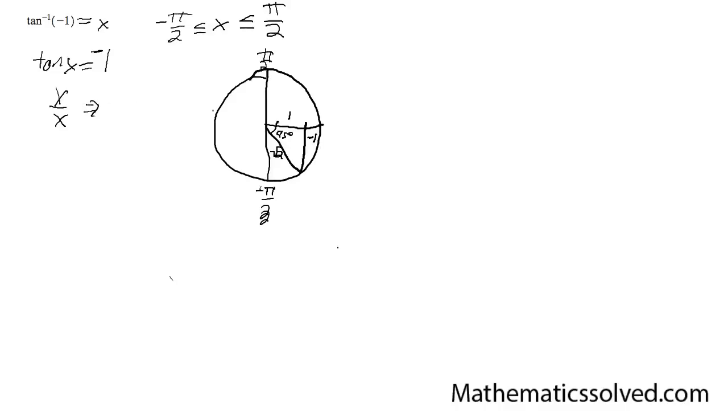So with that, negative 1 over 1 gives us negative 1. So our answer for this is simply negative pi over 4.